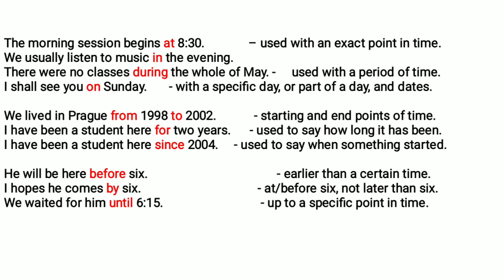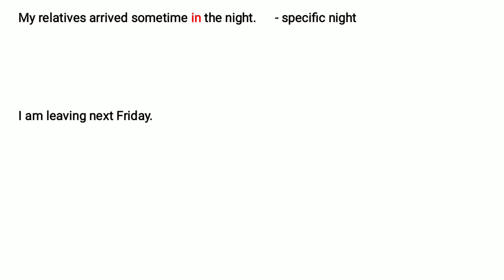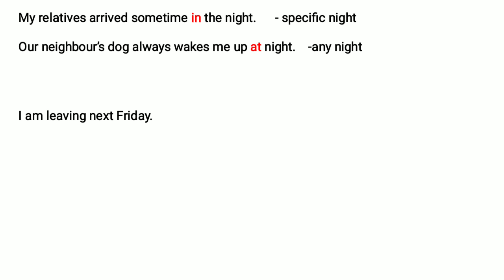Sometimes we use different prepositions with the same noun. For example, 'My relatives arrived sometime in the night' — here 'in the night' refers to a specific night. Suppose you are talking about what happened last week: you were sleeping, heard some noise, and when you woke up the next morning you found your relatives had come sometime in the night. Whereas 'A neighbor's dog always wakes me up at night' — you can be talking about any night, not a specific one.